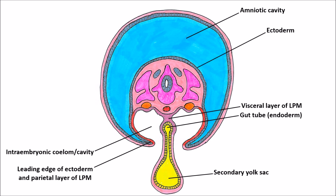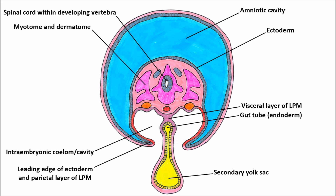The ectoderm remains in contact with the surface of the embryo — it's going to form the epidermis, and it also forms the spinal cord and brain. It gets surrounded by some of the somite mesoderm, specifically the sclerotome forming the actual skeleton, and nearby are the myotome and dermatome forming some of the muscles of the body and the dermal layer. The intermediate mesoderm makes the kidneys and gonads. The dorsal aorta is now present very close to the center of all this development, supplying blood to all these developing tissues.